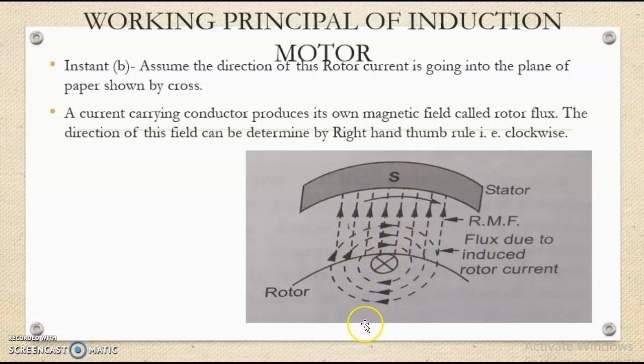If you observe this figure, in this system we have two fields. First is the rotating magnetic field which is clockwise in direction, and second is the rotor flux or rotor field which is also clockwise in a concentric circular manner.